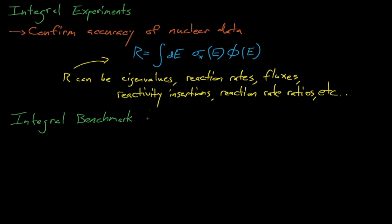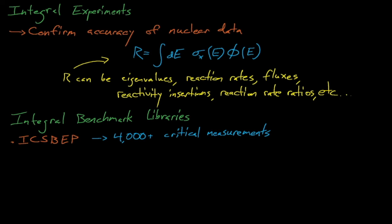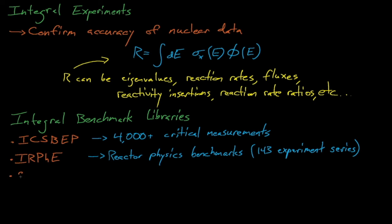The international criticality safety community spends a good deal of time and effort performing and documenting integral benchmark experiments. These experiments are documented or evaluated in libraries such as the International Criticality Safety Benchmark Experiment Project, the ICSBEP, or the International Handbook of Reactor Physics Experiments, or the Shielding Integral Benchmark Archive and Database, or in the Spent Fuel Isotopic Composition Database.